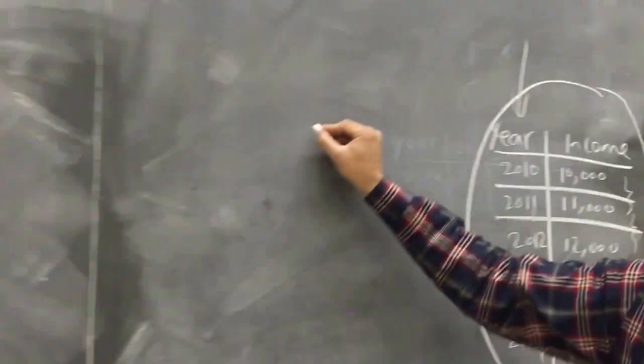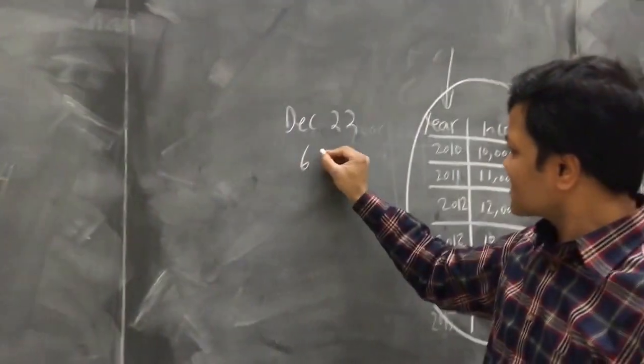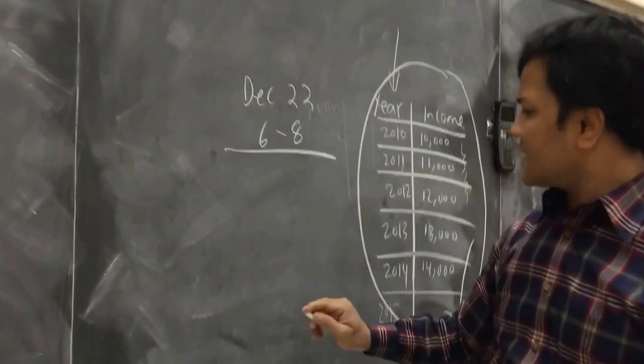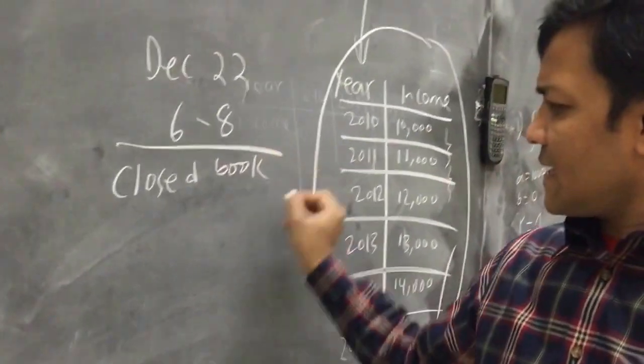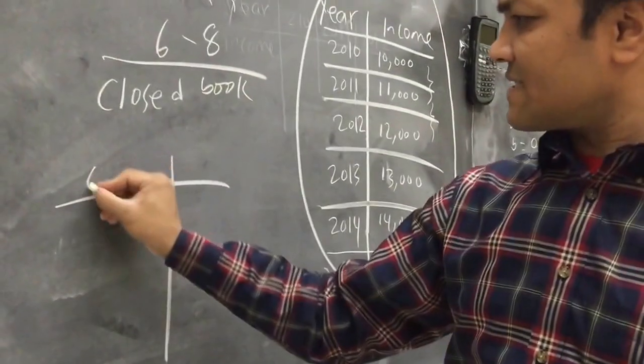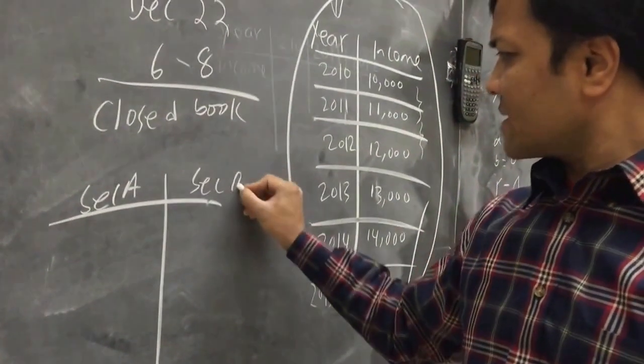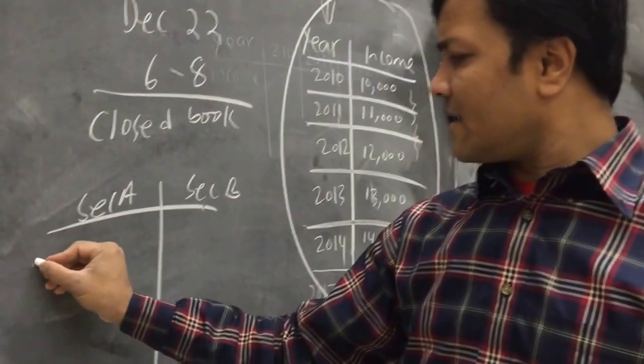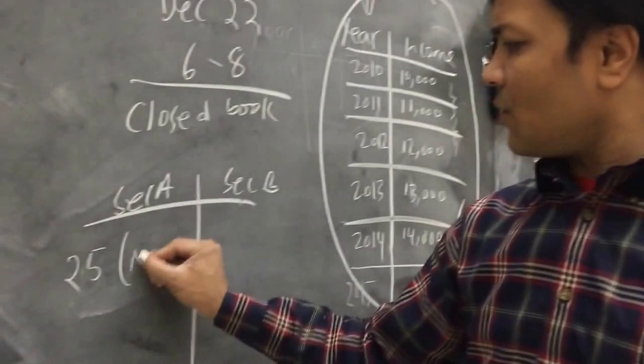Once again, the exam is on December 22nd, 6 to 8. And it's a closed book exam. And exam has two sections, section A and section B. Section A, there are at least 25 questions. You cannot use calculator. No calculator.